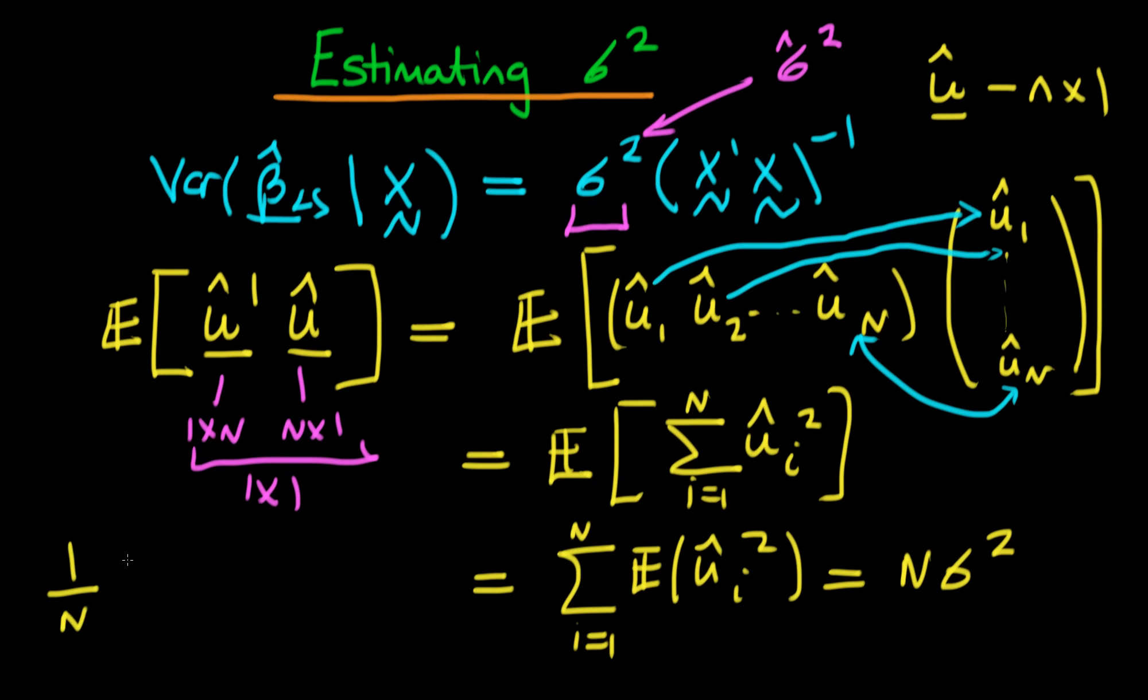let's take 1 over n times the u hat prime times u hat, and that will be our estimator for sigma squared. So we're going to call that sigma hat squared.